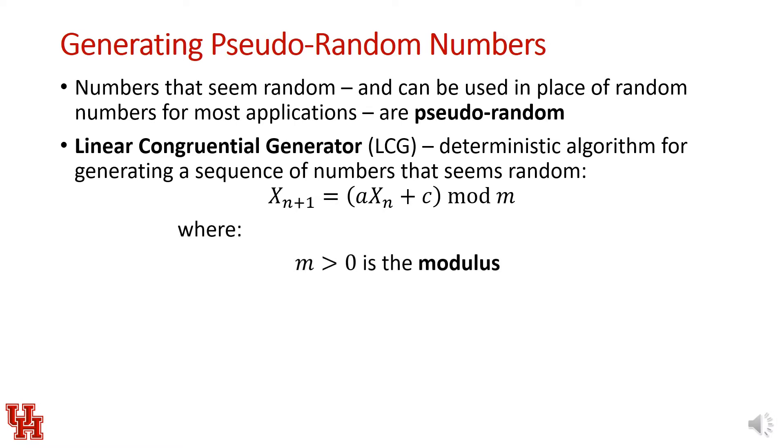Here, m is the modulus, that's what the leading term is divided by. A is a multiplier that is between 0 and m. C is referred to as the increment, also between 0 and m. And x_0, which is the initial number that's specified, is referred to as the seed.